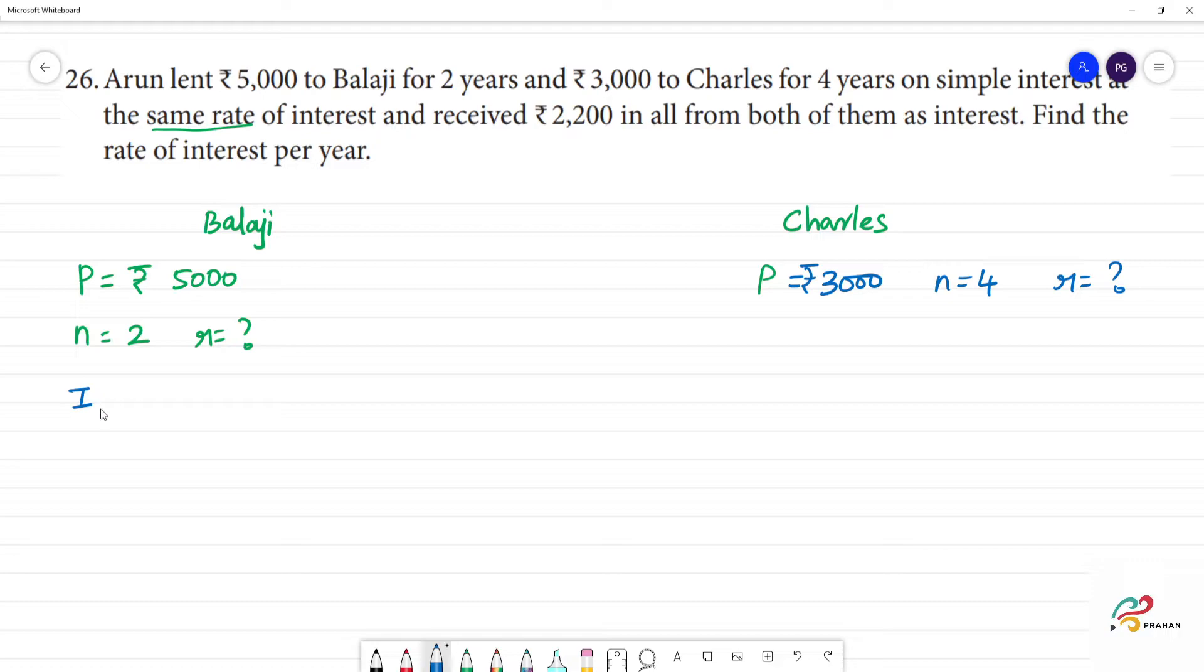We know that I is equal to, I1 that is, interest 1 is PNR by 100. That is I1 is equal to principal 5000 into 2 into R by 100. So now we can cancel the zeros. I1 is equal to 5 into 2 is 10, that is 100R.